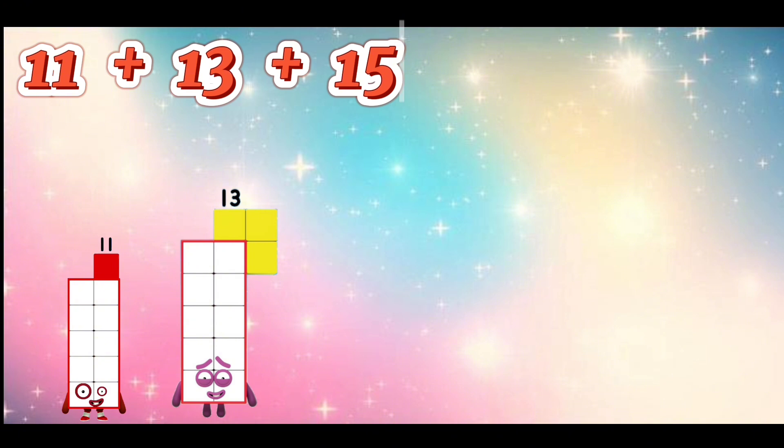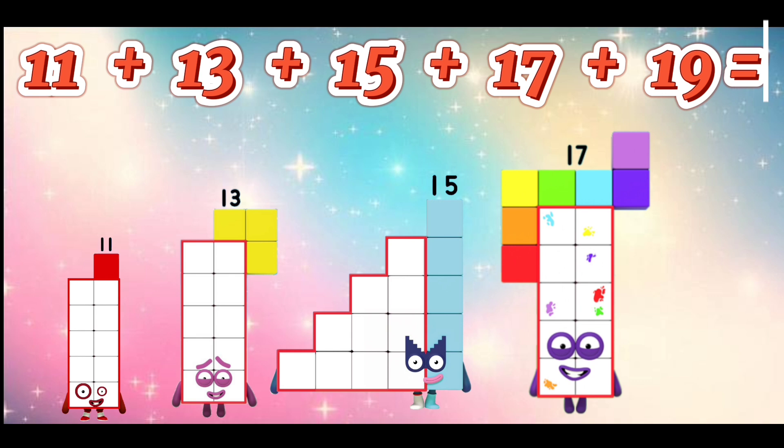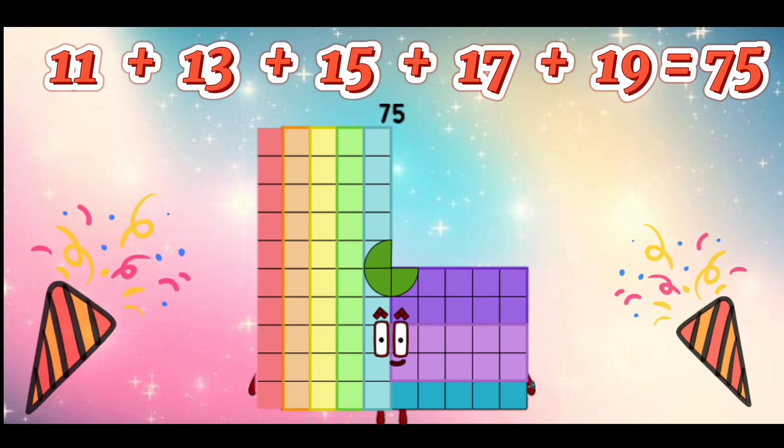11 plus 13 plus 15 plus 17 plus 19 is equal to 75.